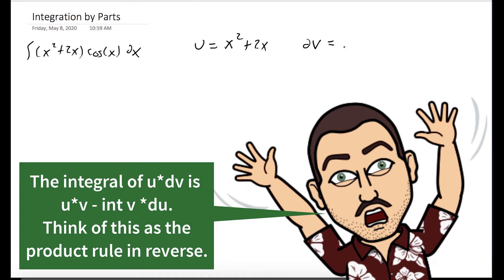We'll let u be x squared plus 2x and dv be cosine of x dx. The derivative of u is 2x plus 2, and the integral of dv is sine of x.